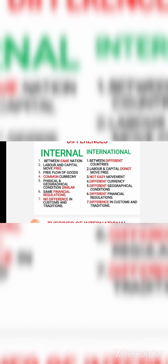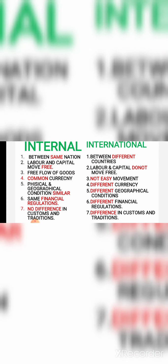Now let us understand the difference between internal trade and external trade — a very important five-mark or three-mark answer. First point: when trade takes place between individuals and firms belonging to the same nation, you call it internal trade; when trade takes place between individuals or firms of different countries, you call it international trade. Second point: in internal trade, labor and capital can move freely from one region to another; whereas in international trade, labor and capital do not move easily from one nation to another due to many formalities. Third point: there is no restriction on the free movement of goods and services in internal trade; whereas in international trade, goods and services cannot move freely due to tariffs and quotas.